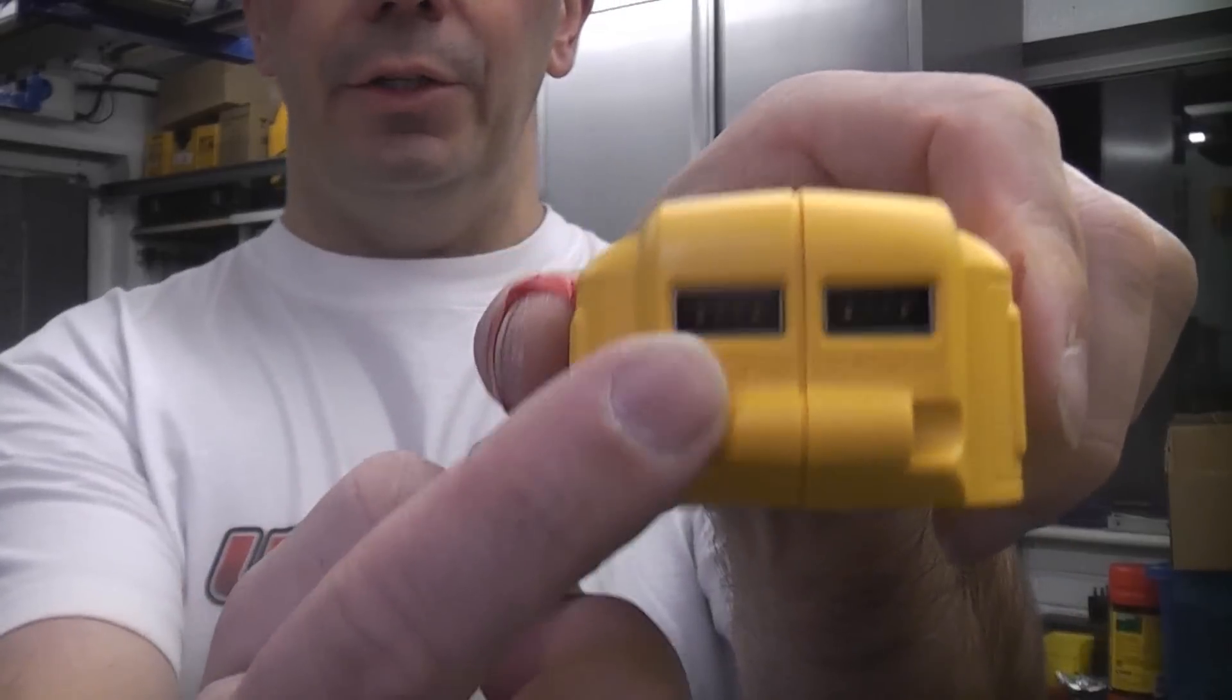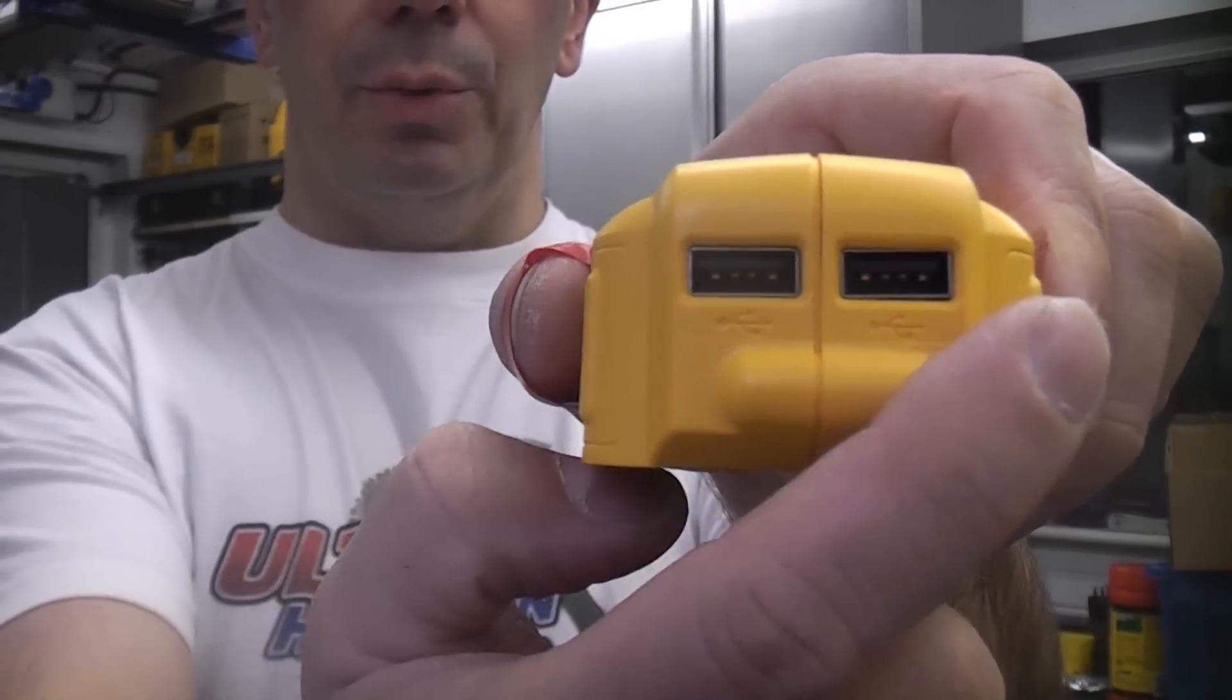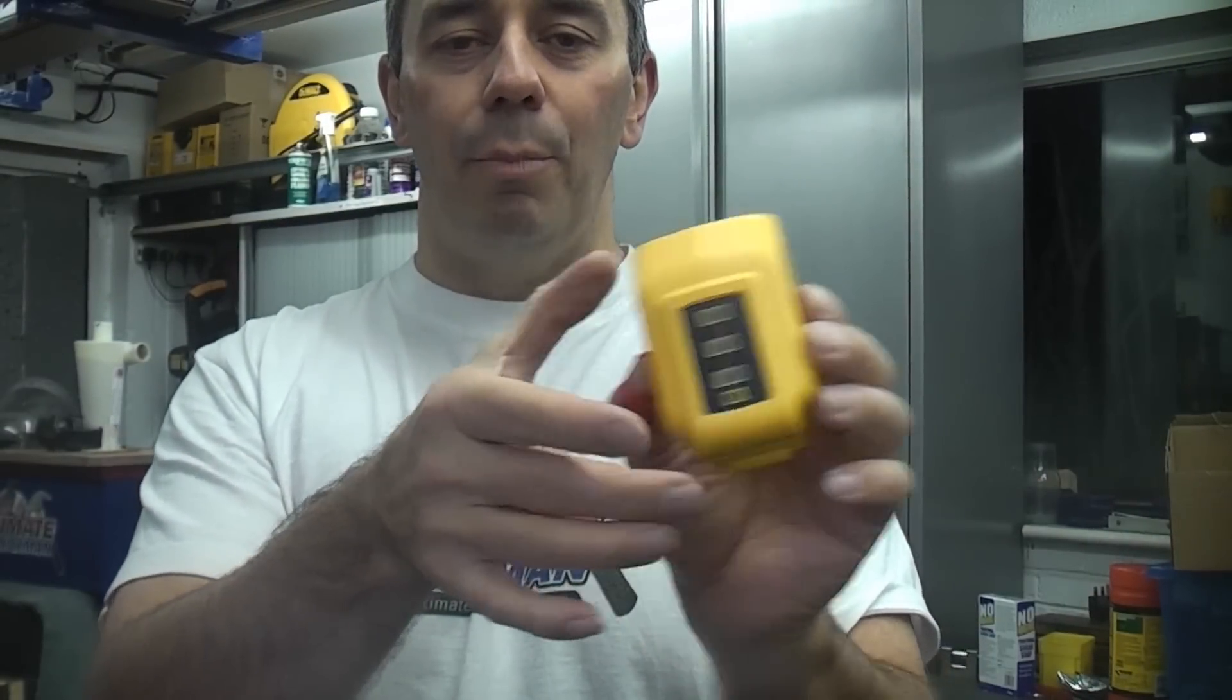This is the DEWALT DCB090, which is a USB charger. On the front there you can see the two USB ports which will give you 1.5 amps of output, and it is compatible with the 10.8, 14.4, and 18 volt DEWALT XR batteries.